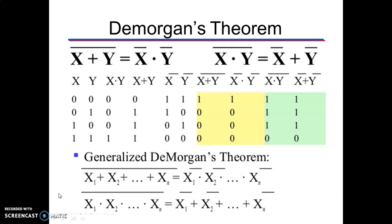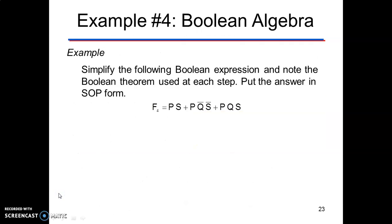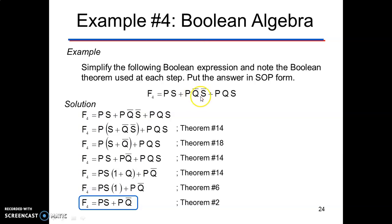Now let us simplify the expression p·s + p·q̄·s̄ + p·q·s using Boolean algebra. Taking p in common from the first two terms gives p·(s + q̄·s̄). Using the absorption law, s + q̄·s̄ = s + q̄. Multiplying p back: p·s + p·q̄ + p·q·s. Taking p·s common from the first and third terms gives p·s·(1+q) = p·s. So the expression simplifies to p·s + p·q̄.